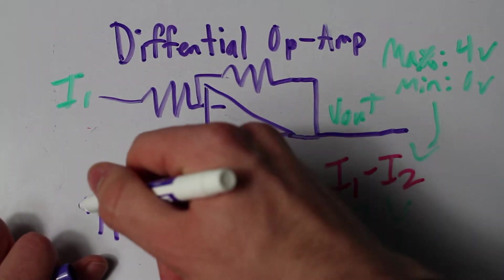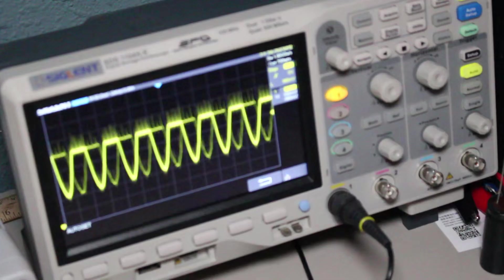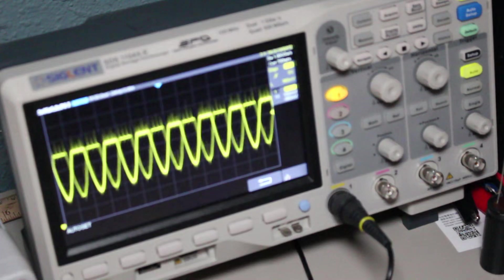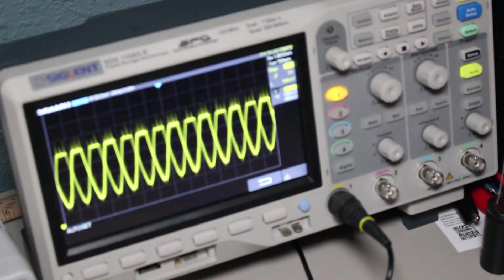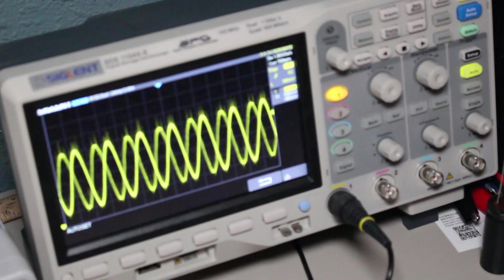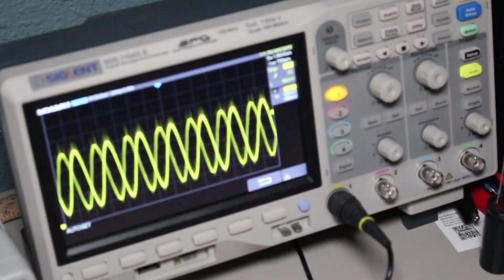Anyways, by using this op amp and making the differential configuration, we now have an AC signal. Again, if you want to learn more about the differential configuration, or just op amps in general, please visit my previous video on op amps to figure out everything you want to know about them.